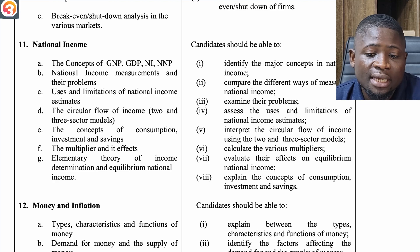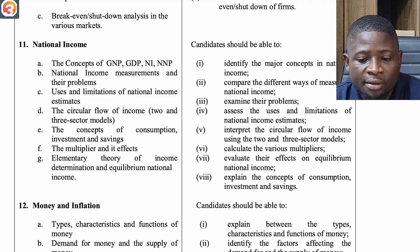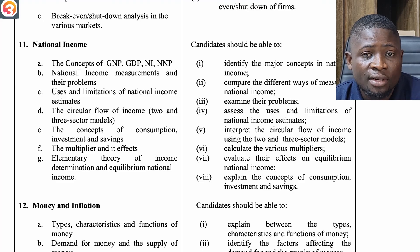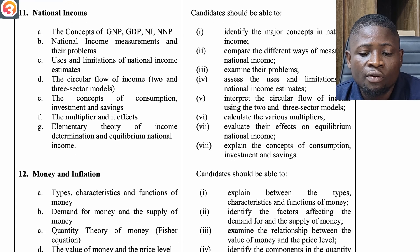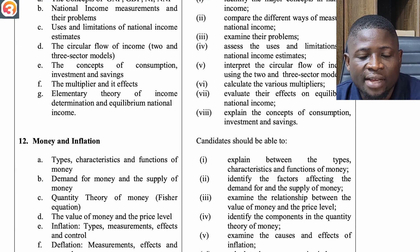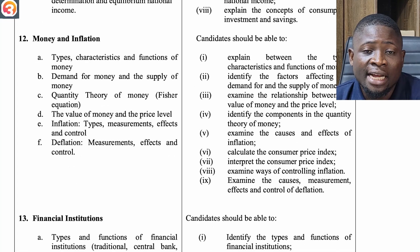The eleventh topic is National Income — concepts of Gross National Product (GNP), Gross Domestic Product (GDP), Net National Product (NNP), and national income; measurements and their problems; uses and limitations of national income estimates; the circular flow of income in two- and three-sector models; concepts of consumption, investment and savings; the multiplier and its effects; and elementary theory of income determination and equilibrium national income.